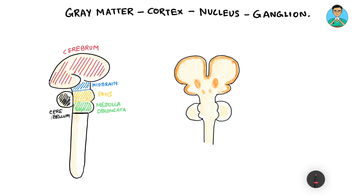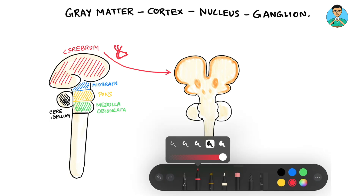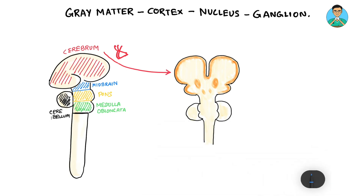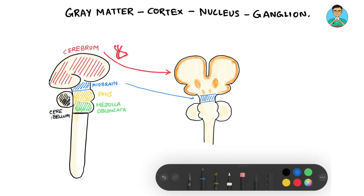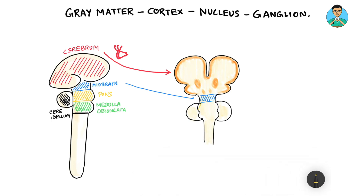This left-hand side diagram that we already know — if we look at the brain from a different aspect, that means if we cut the brain and look at it from the front side, what we will get to see: we will see the cerebrum, the midbrain over here, we will see the pons, we will see the medulla oblongata, and we will see the cerebellum.